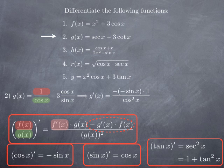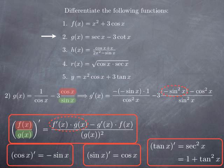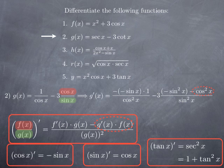Then we have minus 3 times the derivative of cosine x over sine x, for which we use again the quotient rule. The derivative of the top multiplied by the bottom gives derivative of cosine — which is negative sine — multiplied by sine, so we get negative sine squared. The derivative of the bottom, which is sine x, gives cosine, and we multiply by the top, which is cosine, so we get cosine squared x. The bottom squared is, of course, sine squared x.